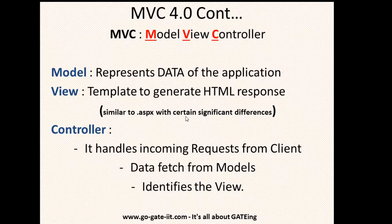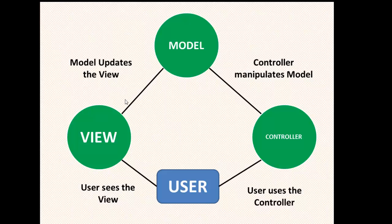Finally, we have the controller. It handles the incoming request from the client, fetches data from the models, and identifies the view. From the diagram you can notice that the view is the HTML template shown to the user. The user uses the controller for all server-side operations. The controller manipulates the data and passes it back to the model. The model updates back to the view, and this cycle continues.